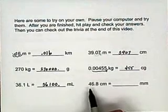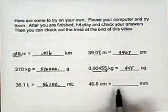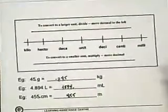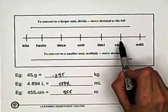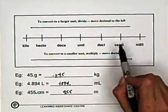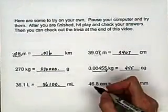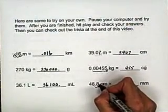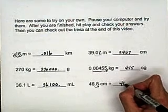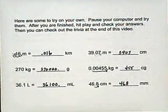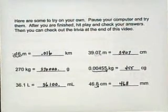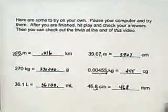And finally, forty-six point eight centimeters to millimeters. We're starting at centi and we're going to milli, which means we'll move the decimal one place to the right. Once to the right. Four hundred and sixty-eight millimeters. Okay. Well done, crew.